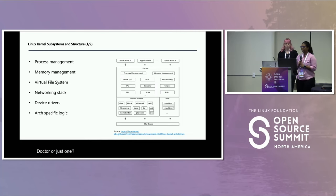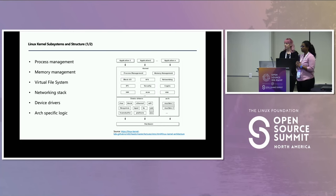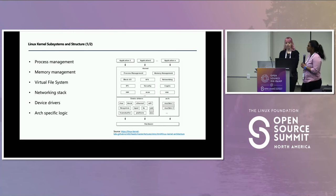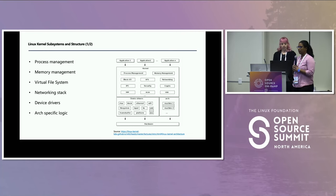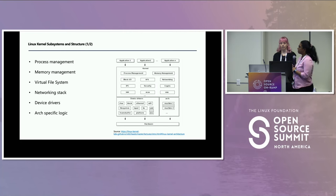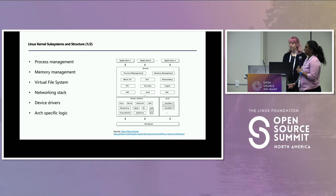I'm going to talk a little about the various subsystems in the Linux kernel, mostly a high-level overview of what each does. There can be multiple applications or processes running on top of the kernel. The first is the process subsystem, which basically manages a process's life cycle — what happens when a process is created, how processes are scheduled, and how a process is terminated. There are also scheduling algorithms around when a process needs to be scheduled on a CPU.